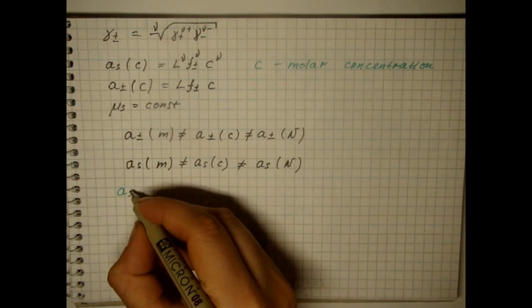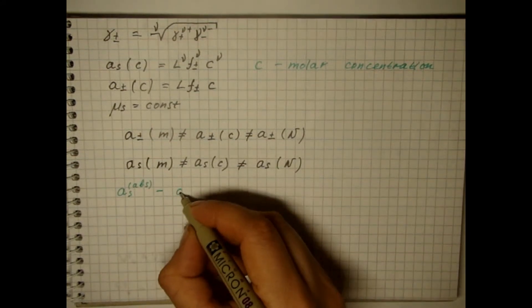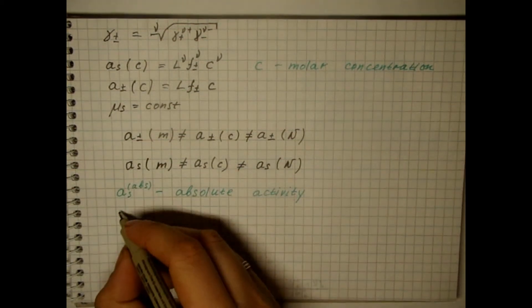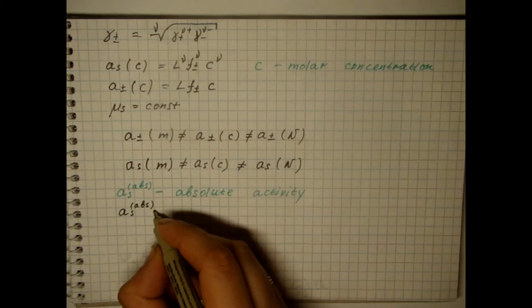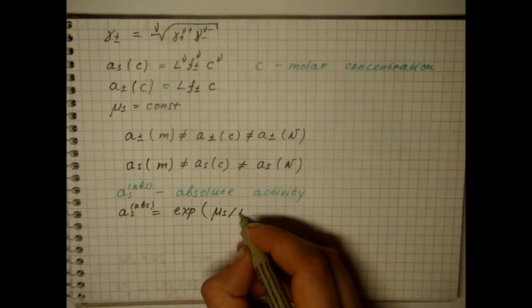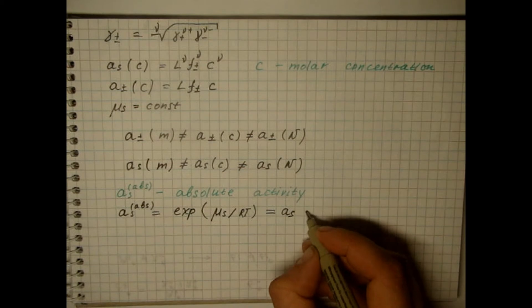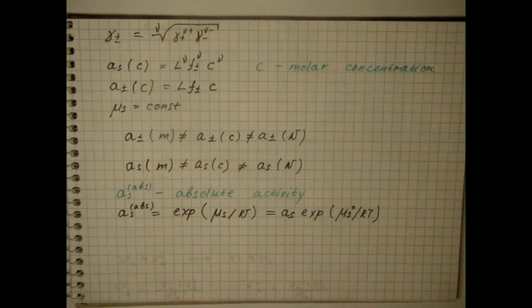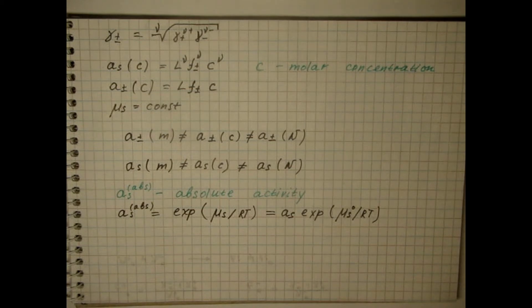Absolute activities are sometimes used that are related to the chemical potential of the salt by ratio. The introduction of absolute activity has the advantage that it is equal to zero in the absence of this component. At the same time, absolute activity does not depend on the choice of the standard states and is the same in all concentration scales.